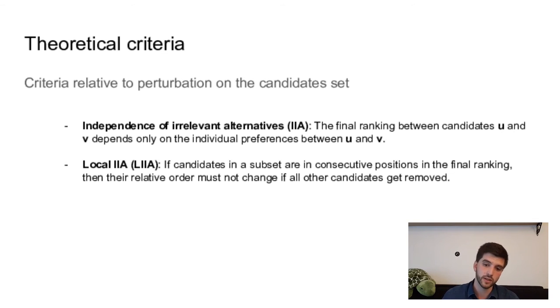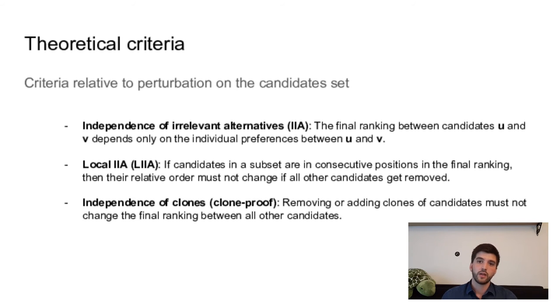And the last one is the independence of clones, which just states that removing or adding clones of candidates should not change the order of the candidates in the final ranking. So typically, mean and median functions do satisfy this criterion because you can add as many candidates as you want, it doesn't change anything.